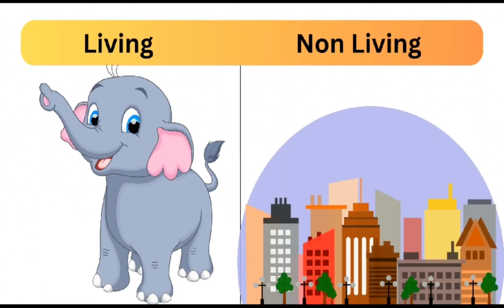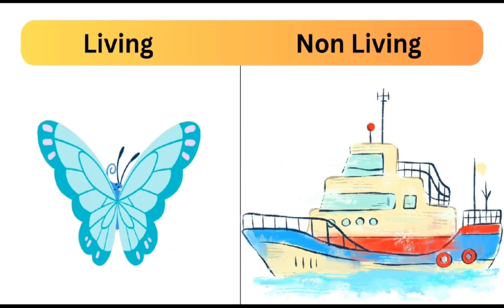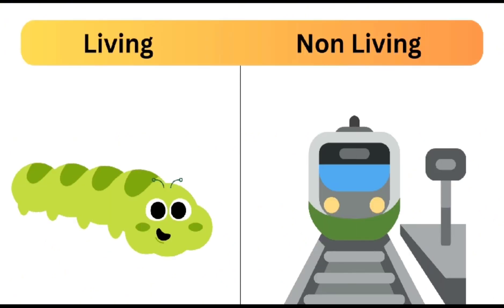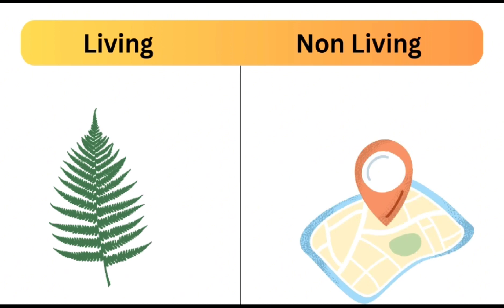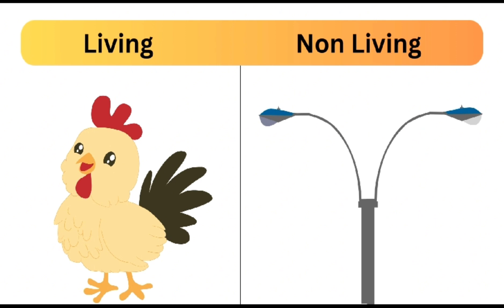Pivot is a living thing and city is a non-living thing. Butterfly is a living thing and sheep is a non-living thing. Snail is a living thing and crane is a non-living thing. Snake is a living thing and screwdriver is a non-living thing. Chicken is a living thing and street lights are non-living things.